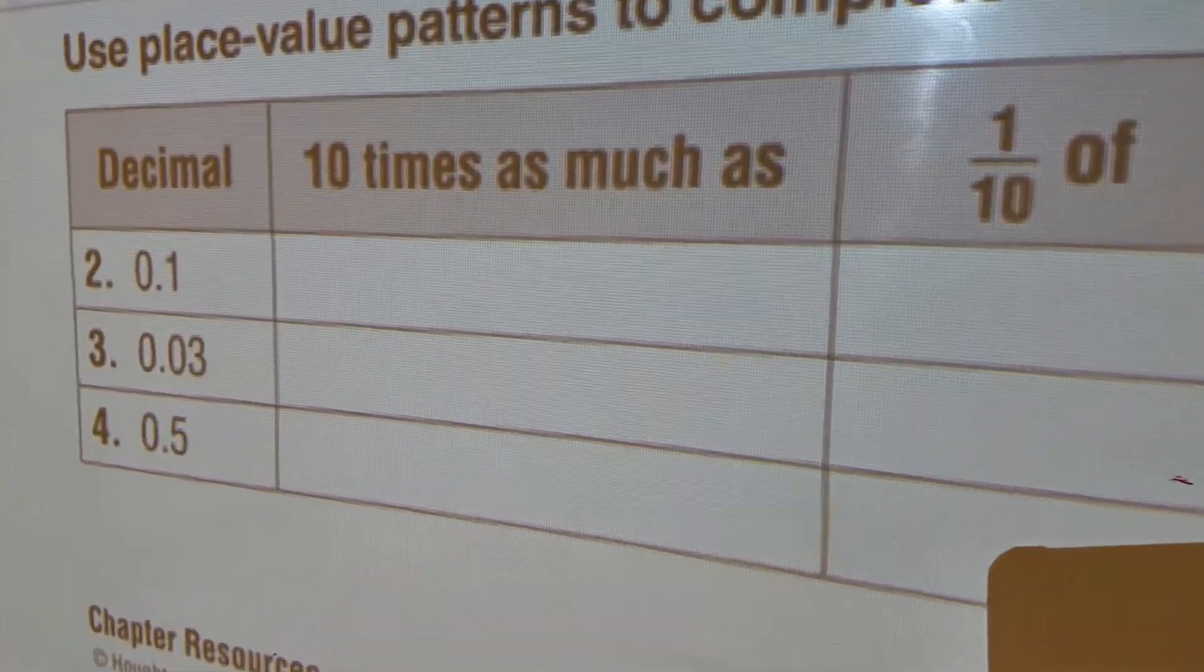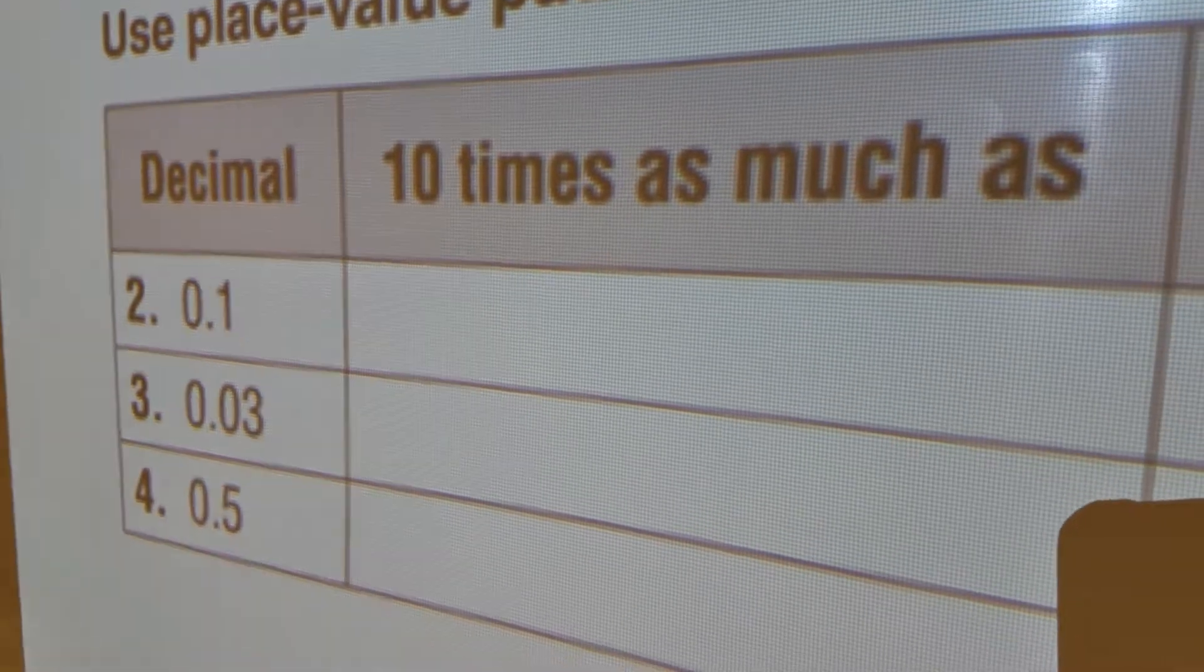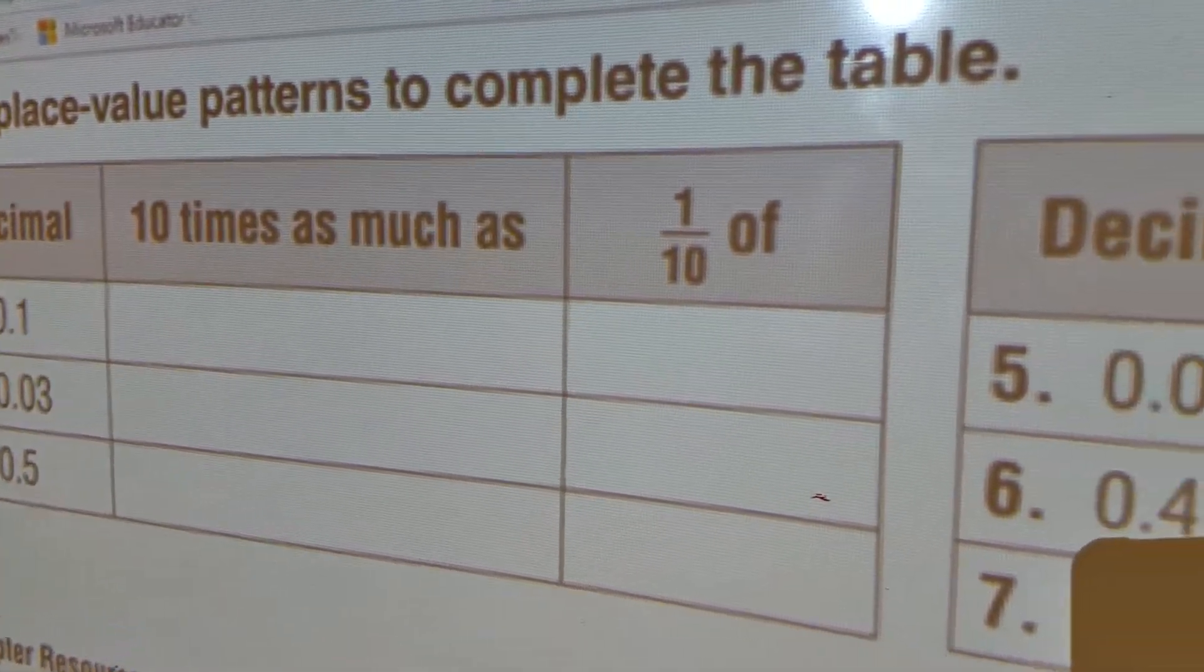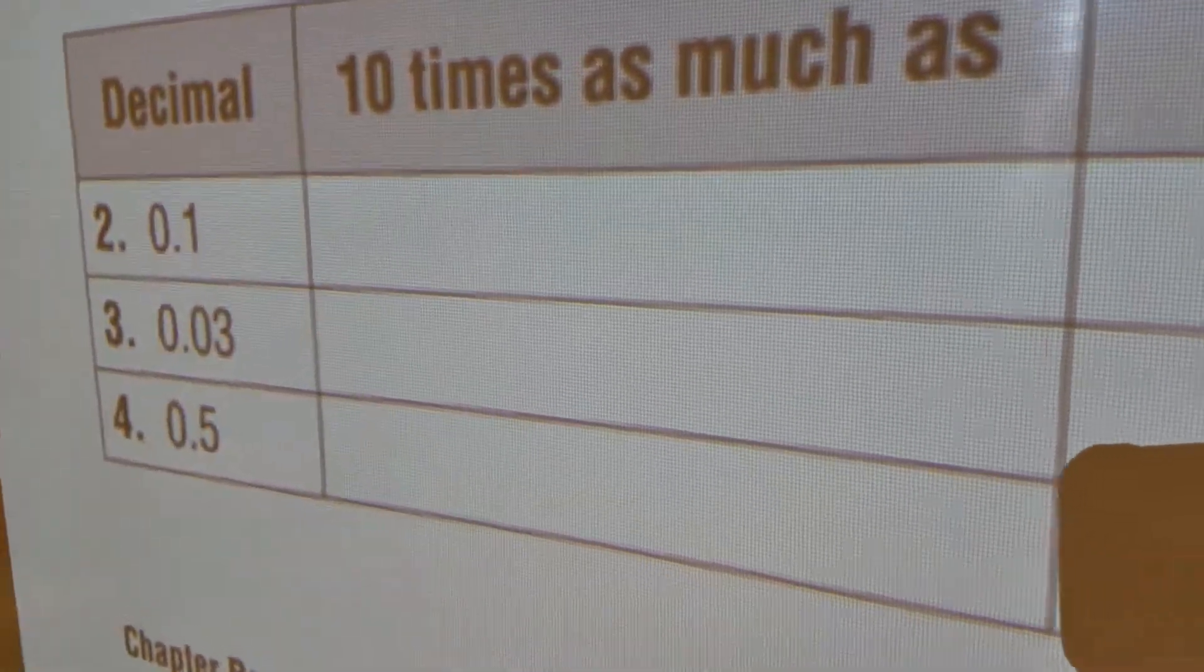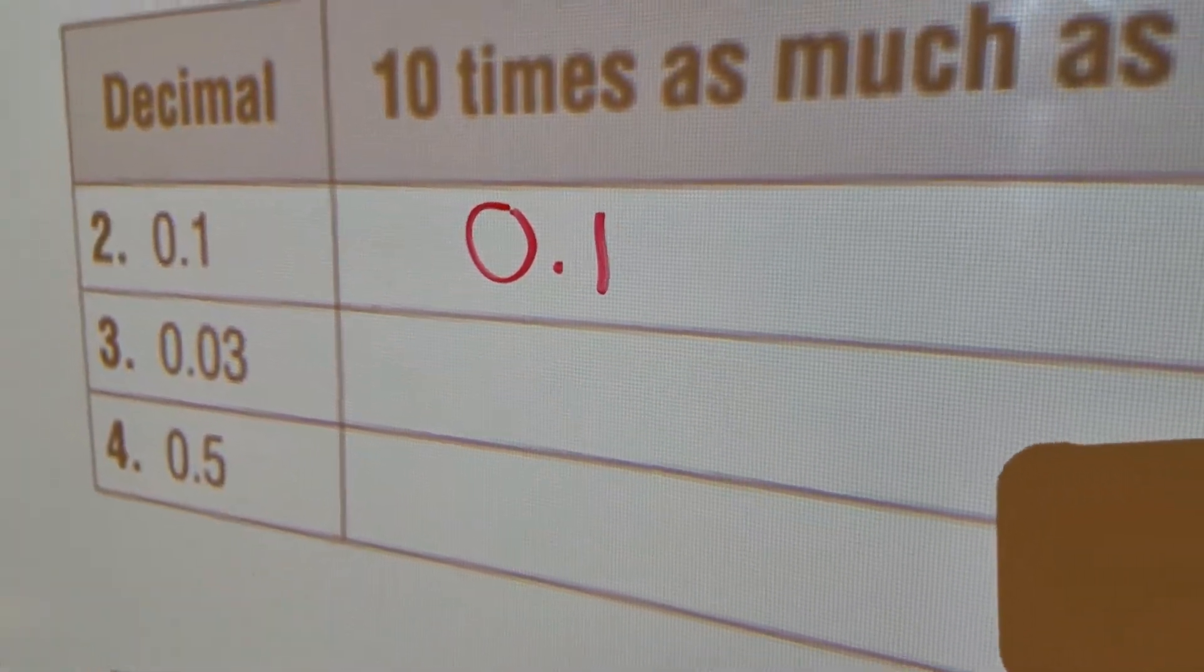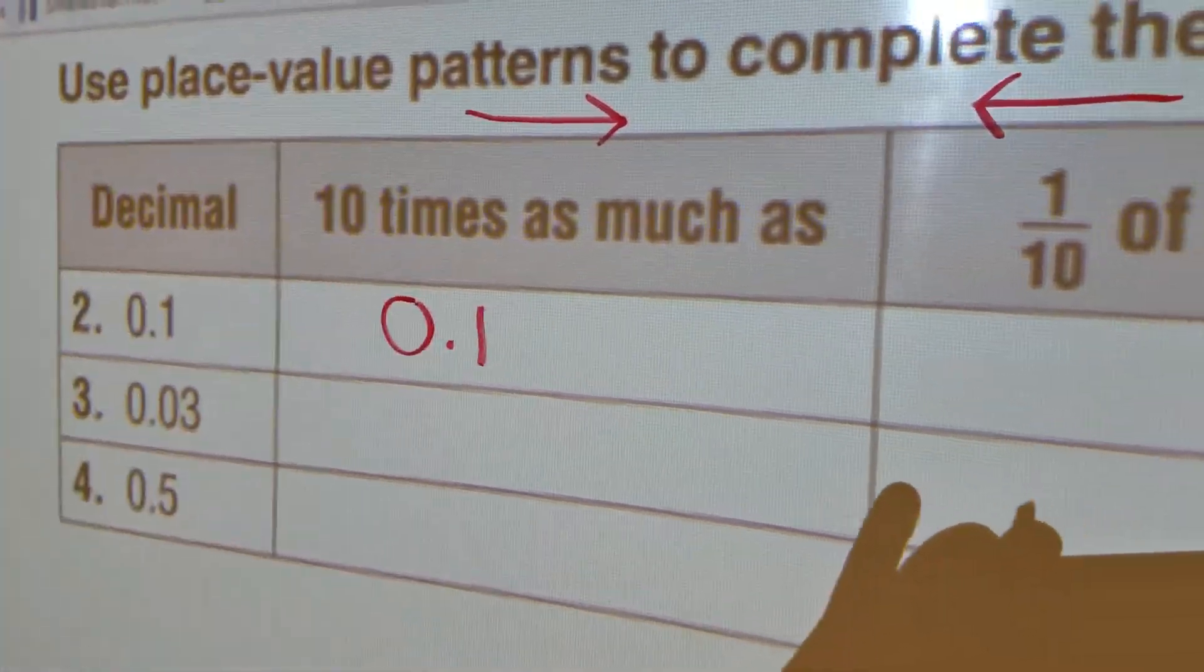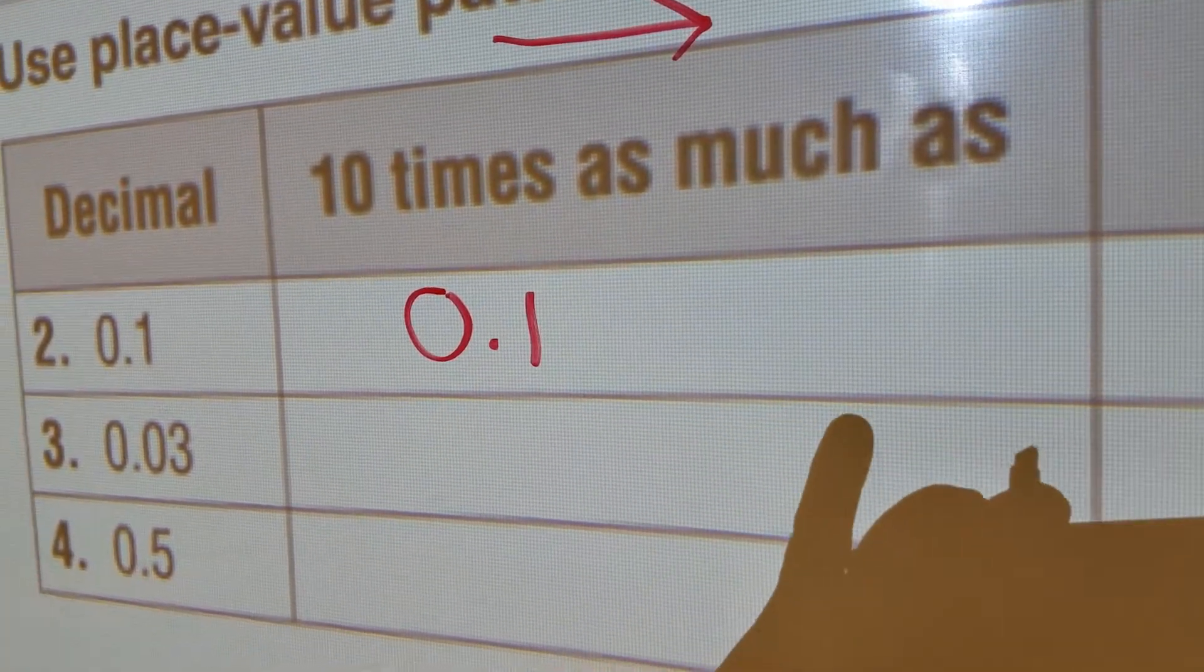here's part two. So part two says, well, I have this number, 1 tenth, number two, that is, 1 tenth. And I'm looking for a number that's 10 times as much as 1 tenth and 1 tenth of 1 tenth. Well, I'm going to write my number here, 0 and 1 tenth. And we learned that if we are looking for a number that's 10 times as much as that number,